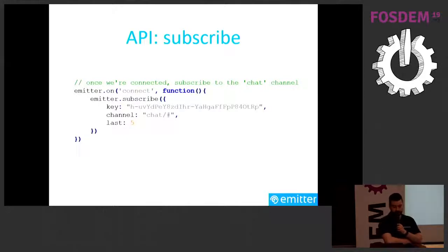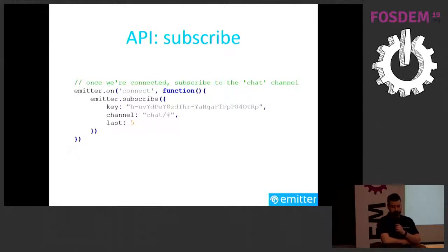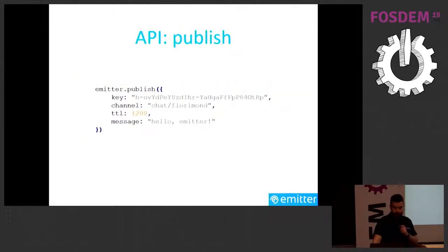Here's how the API looks in JavaScript. To subscribe, you call emitter.subscribe(), providing the key, the channel you want to subscribe to, and optionally a 'last' option specifying how many stored messages you want to receive. To publish, you call emitter.publish(), providing the API key — which may differ from the subscribe key and have different permissions — the channel such as chat/florimond, your message (a string or binary), and optionally a TTL specifying how many seconds the message should be stored.